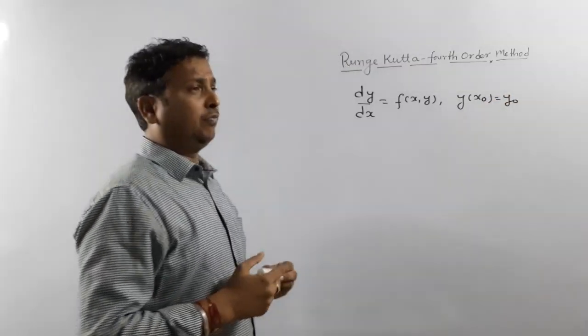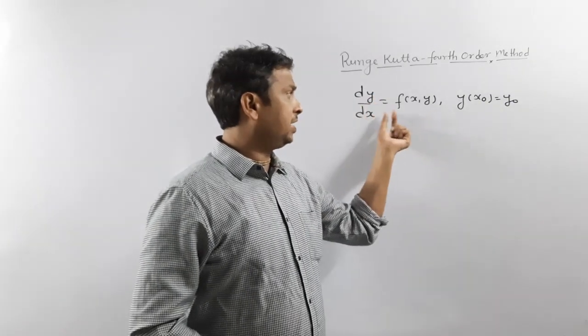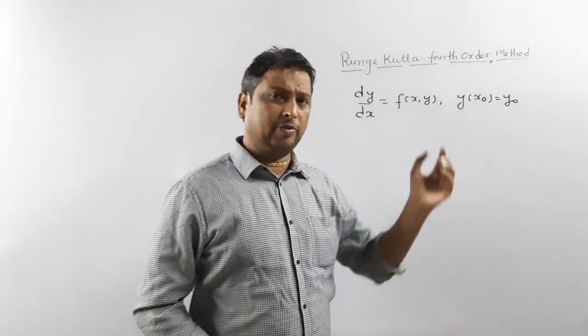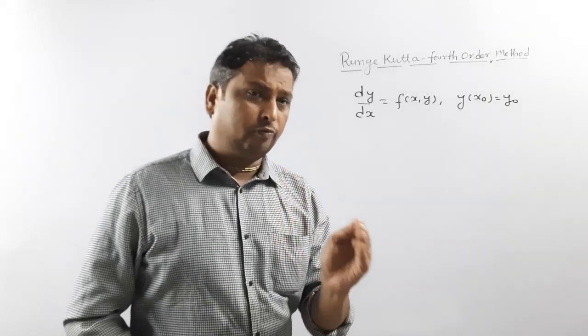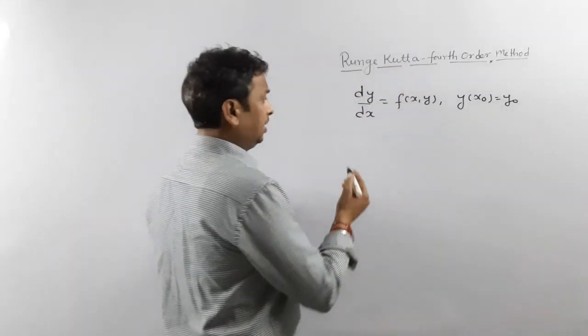Almost they will give dy/dx equals something and y initial condition they will give. Now, how we solve using Runge-Kutta fourth order method. It's very easy. For that purpose, you have to calculate first K1.